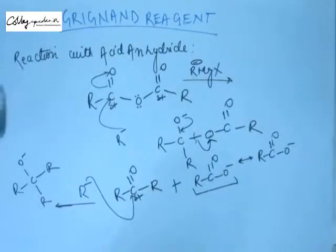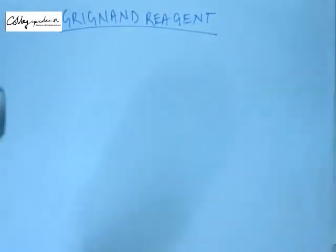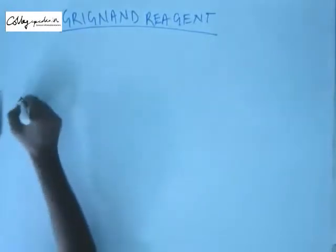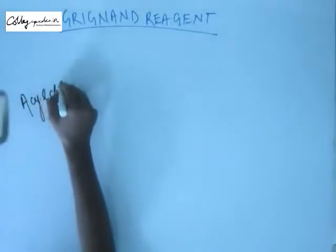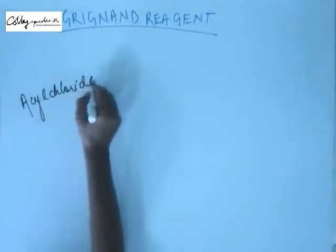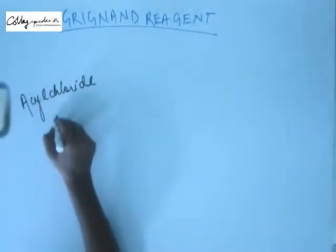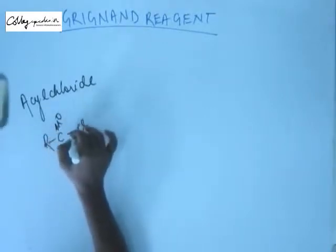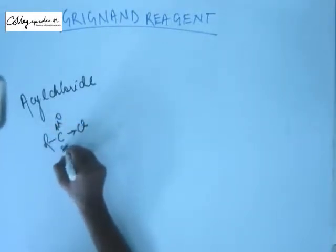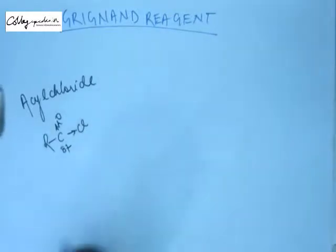Conceptually you must know the reactivity order. Out of the three acid derivatives that result in the formation of alcohol, the most reactive will be acyl chloride. In acyl chloride you have two groups — oxygen and chlorine — both pulling electrons, creating more electron deficiency at the carbon.